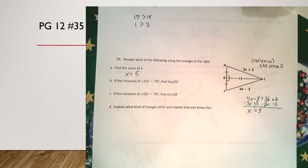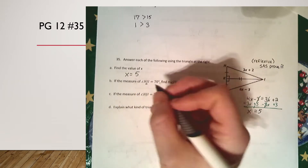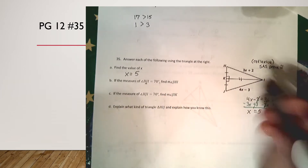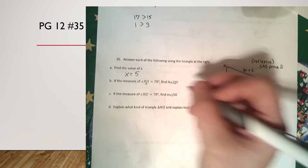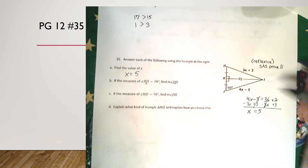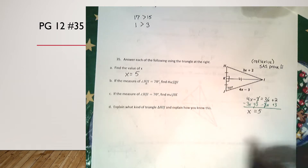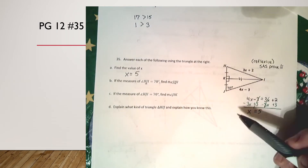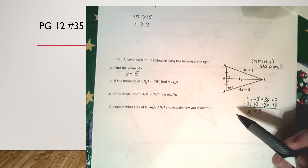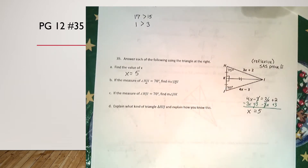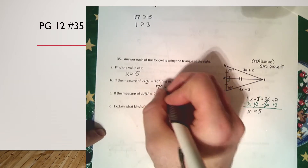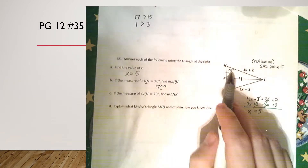Now for part B: if the measure of angle HJI is 70 degrees, find the value of angle JHI. Well, if these two triangles are congruent because of side-angle-side, then by CPCTC — corresponding parts of congruent triangles are congruent — I would also know that angle JHI is 70 degrees. So without doing anything special, that angle is 70.